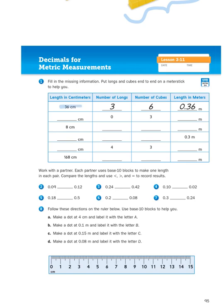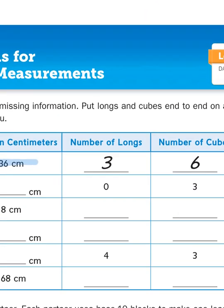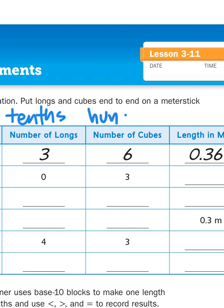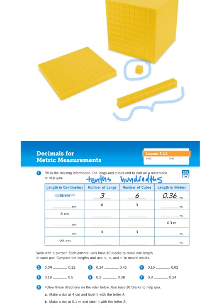If you look up here at the top, if you have a length of 36 centimeters, 36 centimeters is 3 longs and 6 cubes in length, which would be 36 hundredths of a meter or 0.36 meters. Because if a cube is 1 centimeter wide and there are 100 centimeters in a meter, then the cube is 1 one-hundredth of a meter.